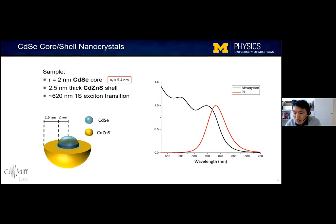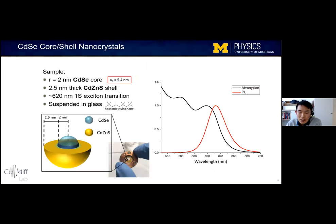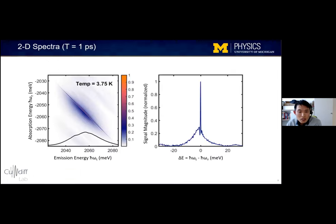So our cadmium selenide nanocrystals were provided by Wonki Bae's group at Sungkyunkwan University, which consists of a two nanometer radius cadmium selenide core inside a 2.5 nanometer thick cadmium zinc sulfide shell. And this is what's called a type one heterostructure, which means both the electron and hole are confined to within the cadmium selenide core. And the exciton Bohr radius in cadmium selenide is around 5.4 nanometers. So this means that the exciton energy level structure is largely determined by the size confinement. And to study these nanocrystals at low temperature, we suspend them in a liquid called heptamethylnonane, which is a long branched alkane that forms a transparent glass at temperatures below 100 kelvin. So you can see a picture here of our sample before it's loaded into a cryostat.